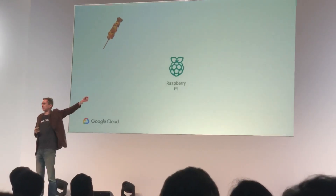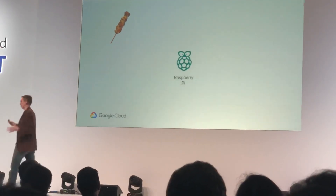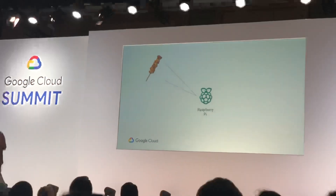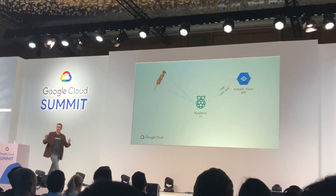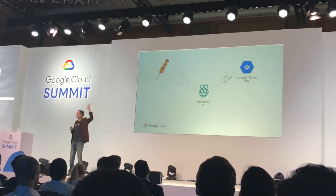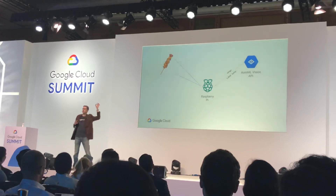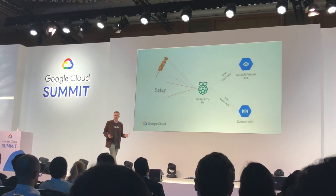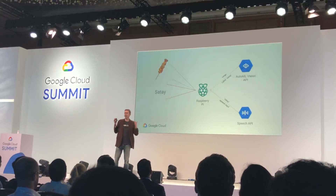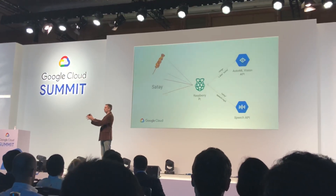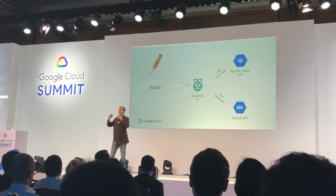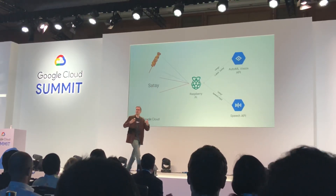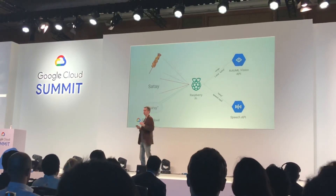So then I have my satay stick. I've got my Raspberry Pi — it's right here. We take a picture of the satay in this case, send the image to AutoML up in Google Cloud, and get back a response — hopefully satay. Then I can display that, and I use another machine learning service called Speech, so I can get a spoken response back from Google Cloud saying, for example, satay. So then our solution can talk.